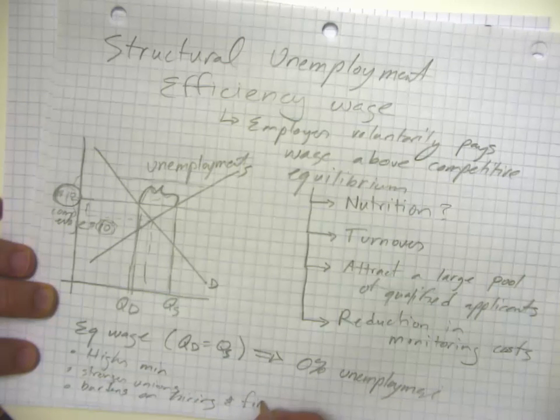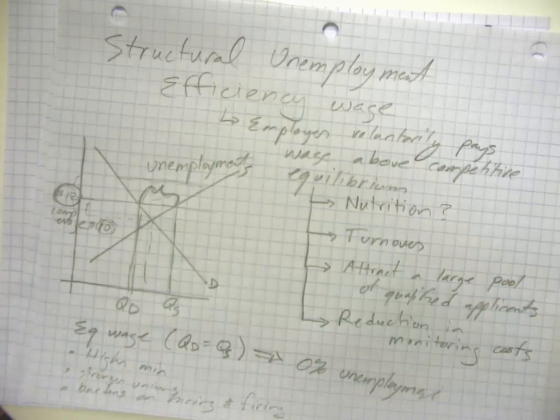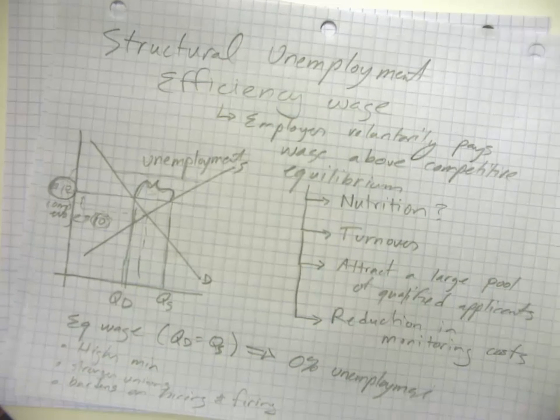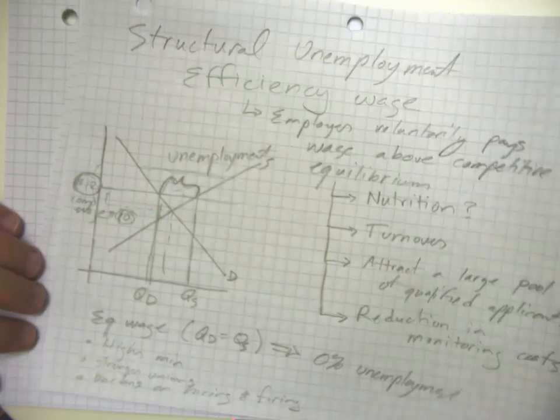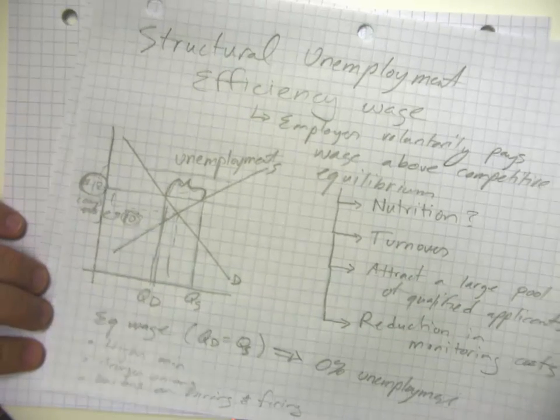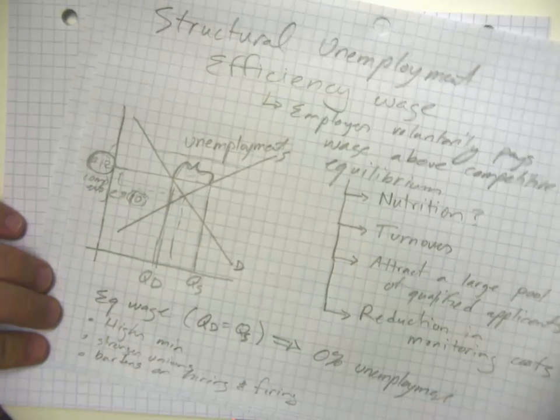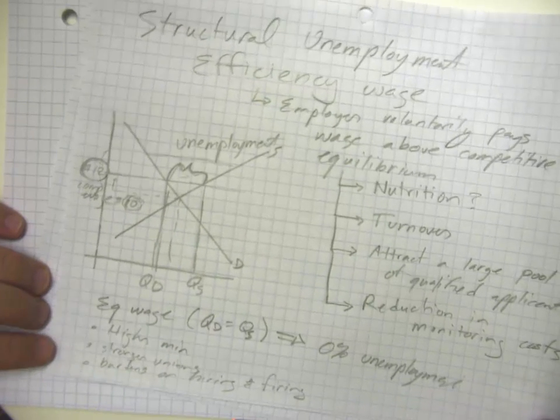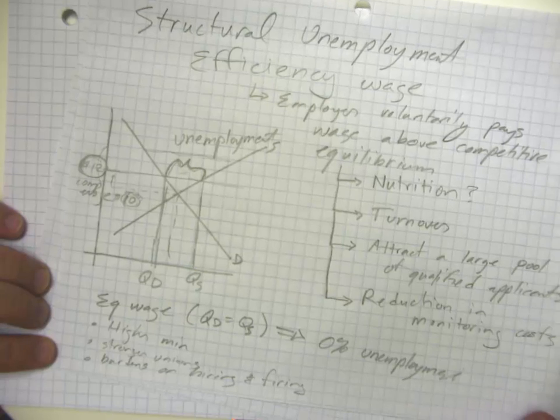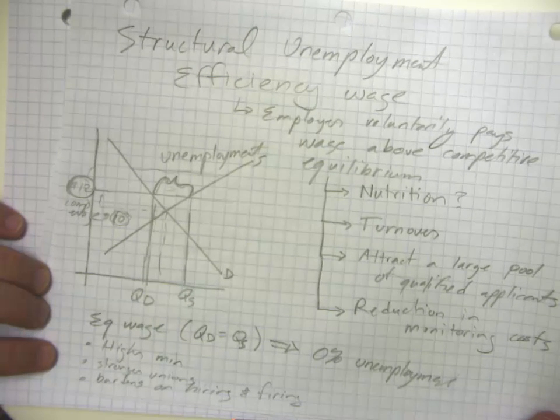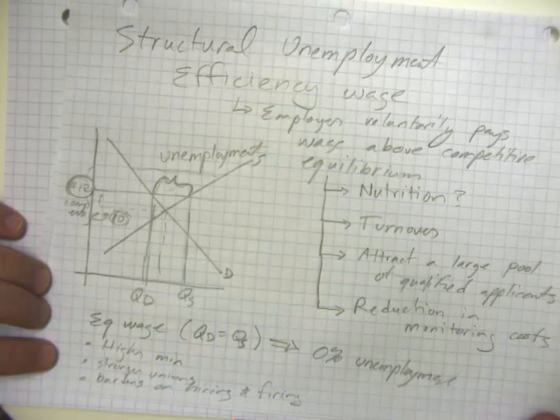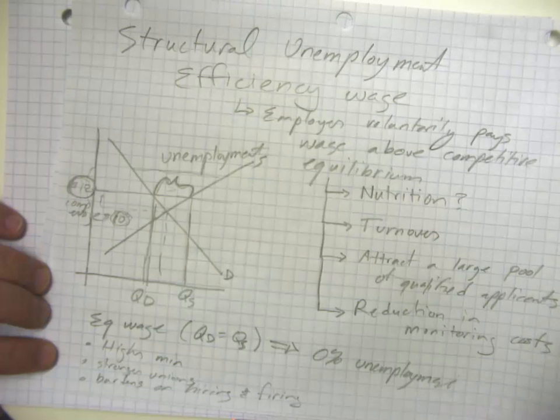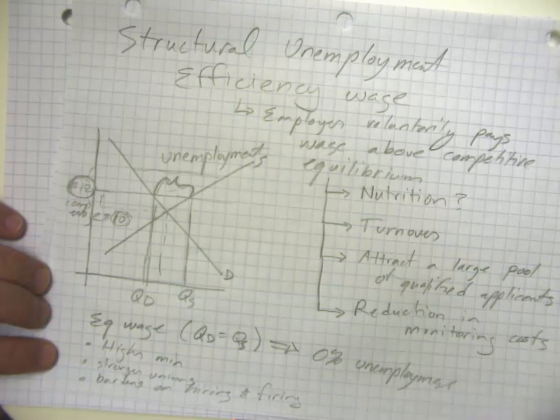But essentially, some countries make it so that when you fire someone, you have to pay them a large amount of severance. In the short run, that may cause firms to fire fewer people and reduce the unemployment rate. In the longer run, firms are now going to become pretty reluctant to hire people because they know they might have to pay out a lot of money if they let them go.